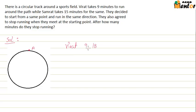So we can say that Virat will be at point A after every multiple of 9. Similarly, Samrat will be at point A after every multiple of 15. Now in order to calculate after how much time both Virat and Samrat will be at point A, we have to calculate the LCM of 9 and 15.